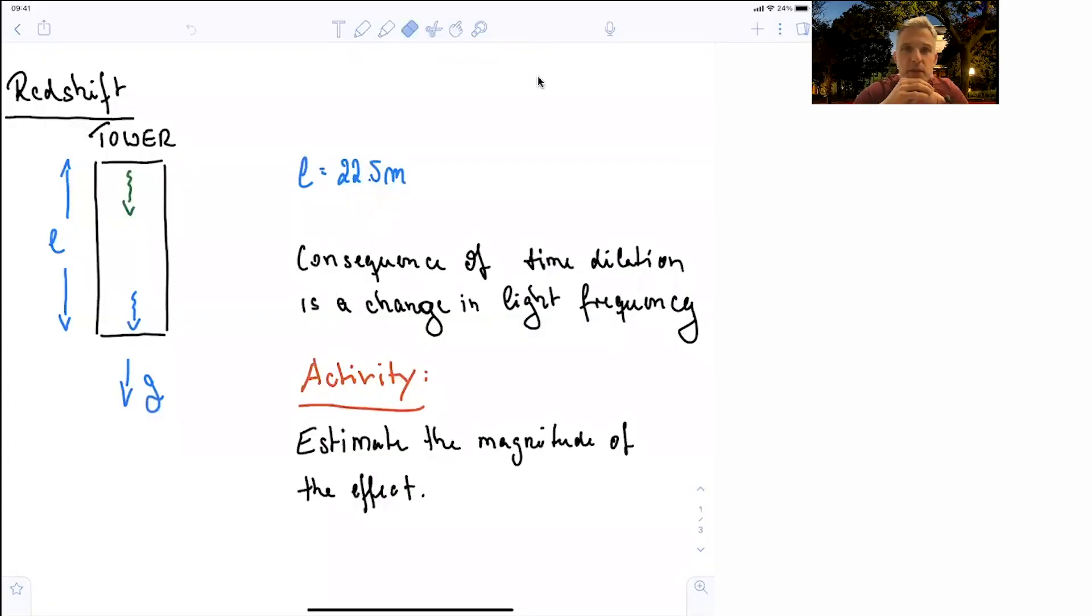Welcome back to A20 Special Relativity. If there is a time dilation effect through gravitational fields, then there's also a redshift through gravitational fields.